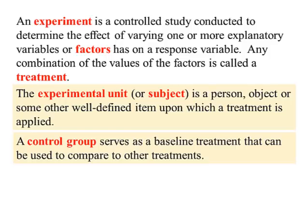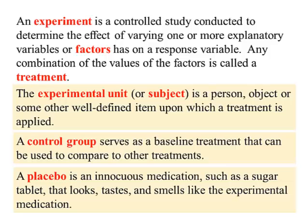In an experiment, we have a control group and a treatment group. The control group serves as a baseline treatment so we can compare it to other treatments. The control group gets what's called a placebo, which is basically like a sugar tablet — it looks, smells, and tastes just like the experimental medication, but it has no medication in it.